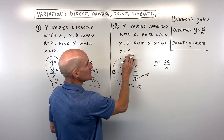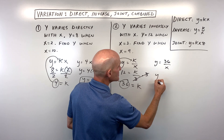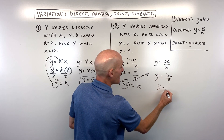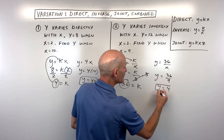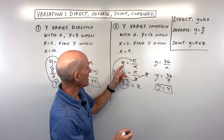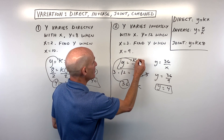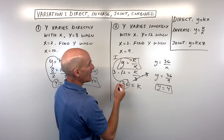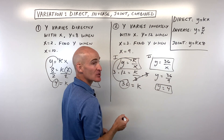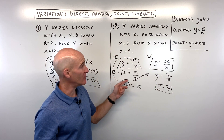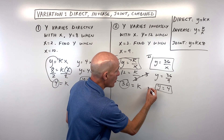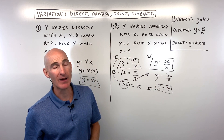Now find y when x equals 9. Substituting 9 in for x, 36 divided by 9 is equal to 4. I usually think of this as three steps: step 1 is the general equation, step 2 is the more specific equation found by substituting the given values and solving for k, and step 3 is using that specific equation to solve for the unknown.